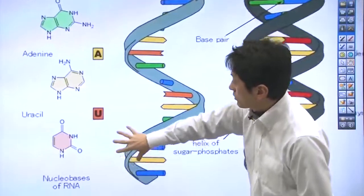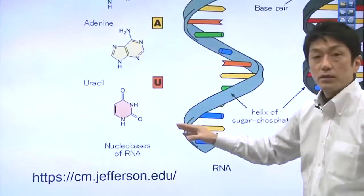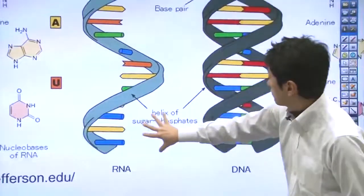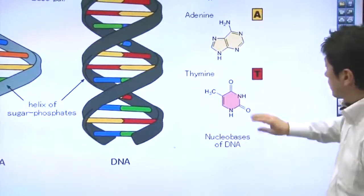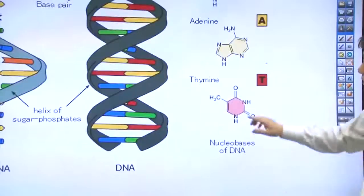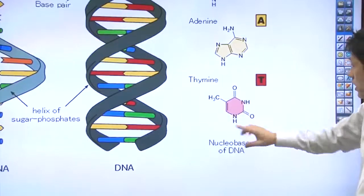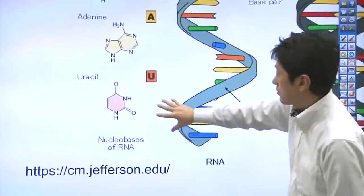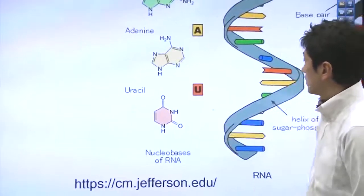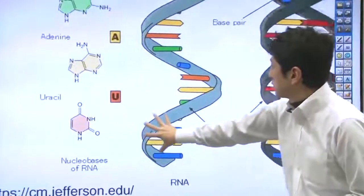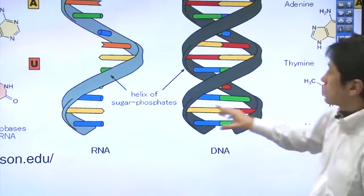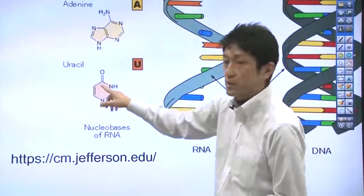Here's the structure of uracil. It's different from thymine in DNA structure. Here's the structure of thymine. If you look at the structure of thymine and the structure of uracil, the methyl structure is missing in uracil.